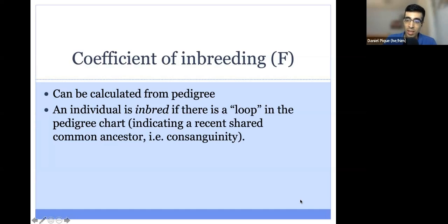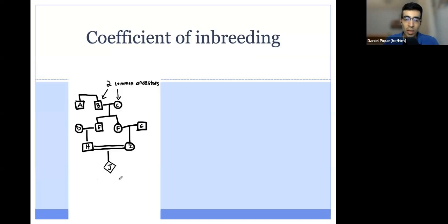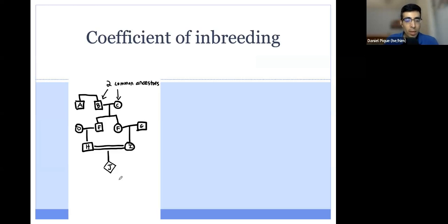Here we show a pedigree of two individuals, H and I, who are consanguineous. They have two shared common ancestors — their grandparents — making them first cousins. One question we can ask is: what is the coefficient of inbreeding for their offspring, person J?